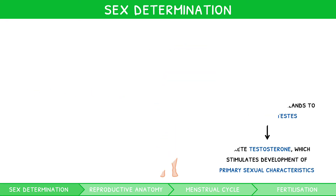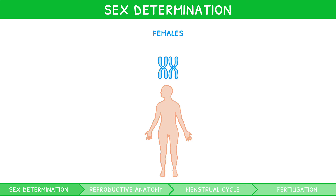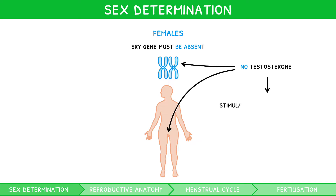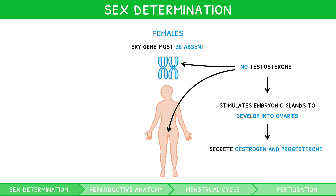For a zygote to develop into a female, the SRY gene must be absent. This causes an absence of testosterone and, in the presence of progesterone and estrogen from the mother's ovaries and placenta, stimulates the embryonic glands to develop into ovaries. The ovaries are crucial for female development, as they secrete estrogen and progesterone, which stimulate the development of female primary sexual characteristics.